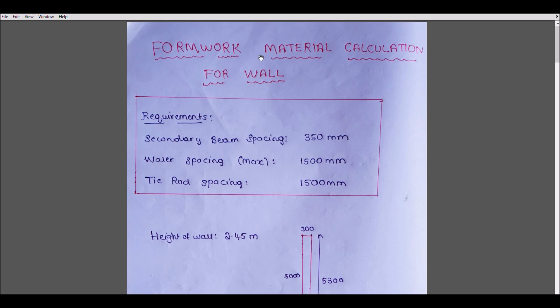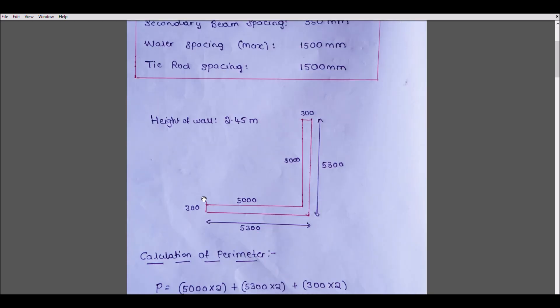First, we will see the requirements I wrote here. As you see, the secondary beam spacing, wailer spacing, and tie rod spacing. How I got these figures—I had made a video on how to calculate this design of vertical formwork. You have to go and check how I got this spacing. Once I got the spacing, I will consider a 5-meter by 5-meter L-shaped wall, 300mm thick, with a height of 2.45 meters.